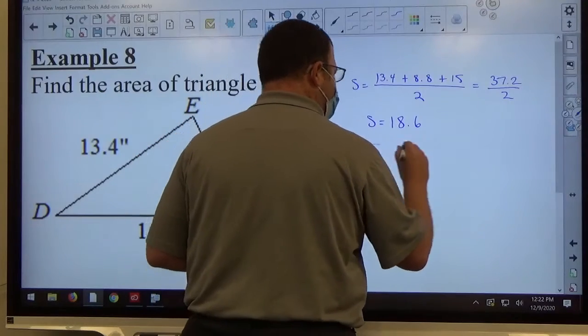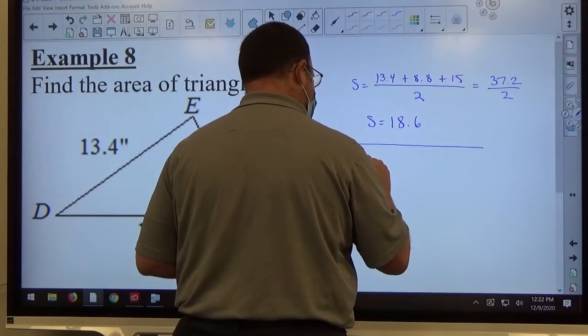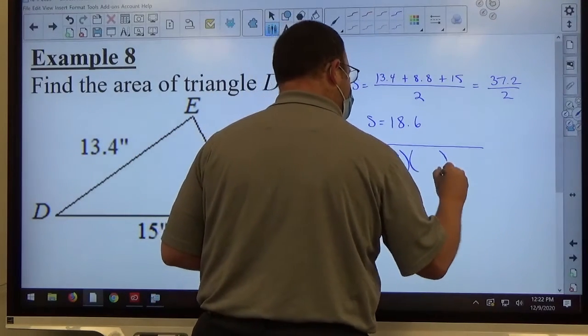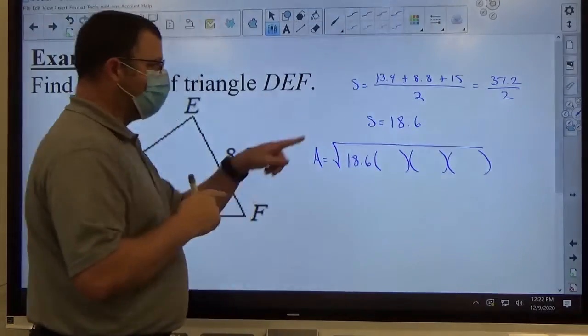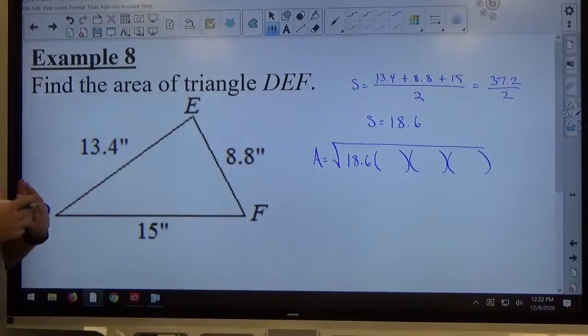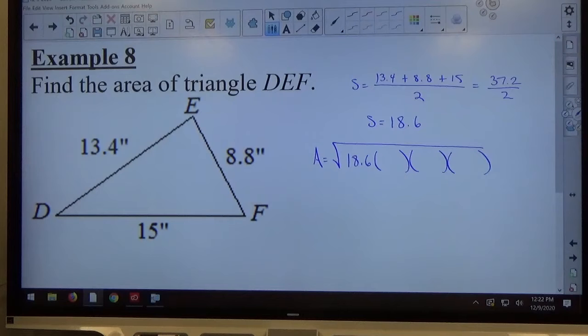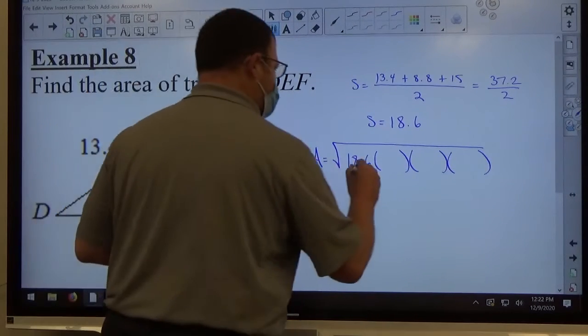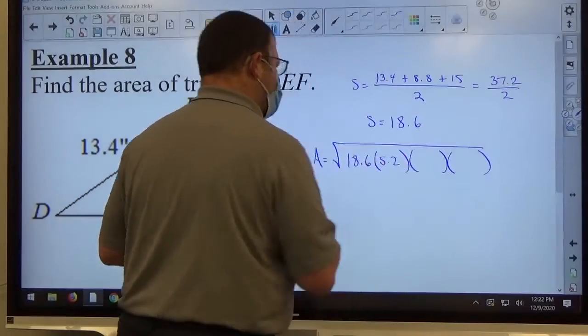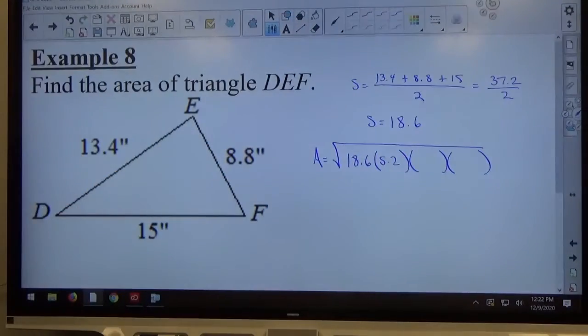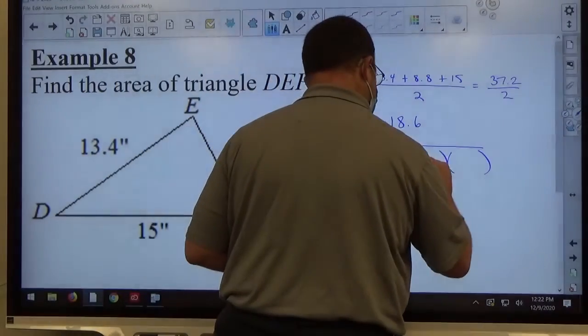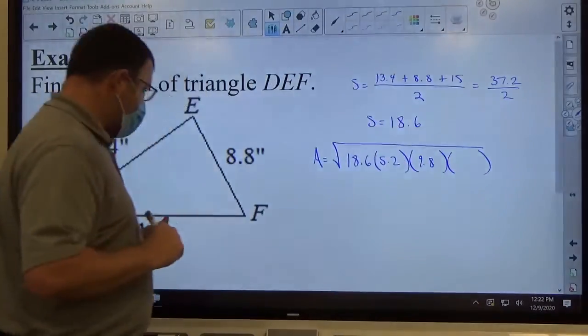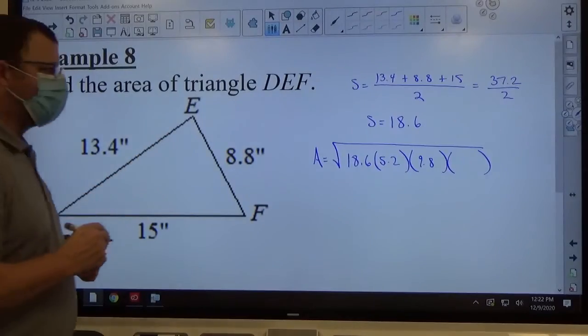Area equals the square root of whatever S is times the other three numbers, and the other three numbers are just S minus each of these. And again, if you can do it mentally, fine. If not, use a calculator. 18.6 minus 13.4 is 5.2. 18.6 minus 8.8 is 9.8. And 18.6 minus 15 is 3.6.